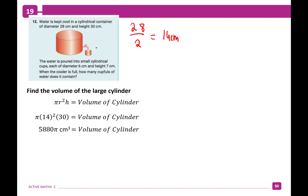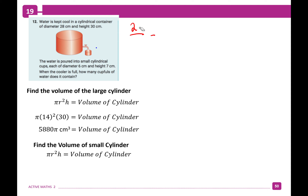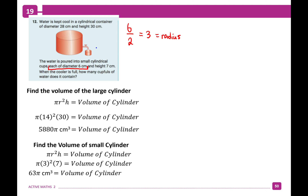Now find the volume of the small cylinder cup. Formula: π r² h. The diameter is 6 centimeters, so the radius is 3 centimeters. That gives π × 3² × 7 = 63π centimeters cubed for the small cylinder.